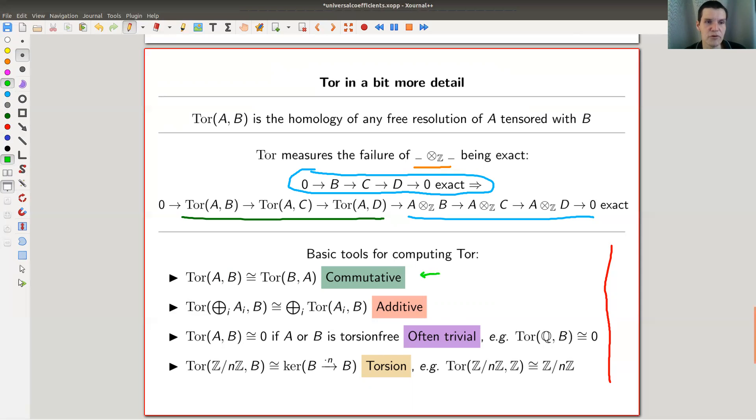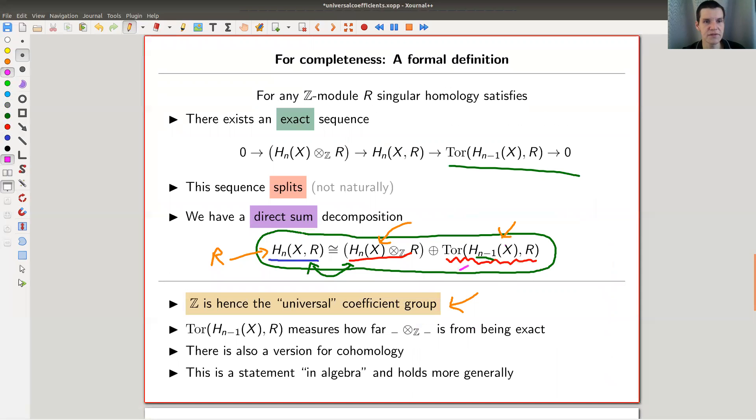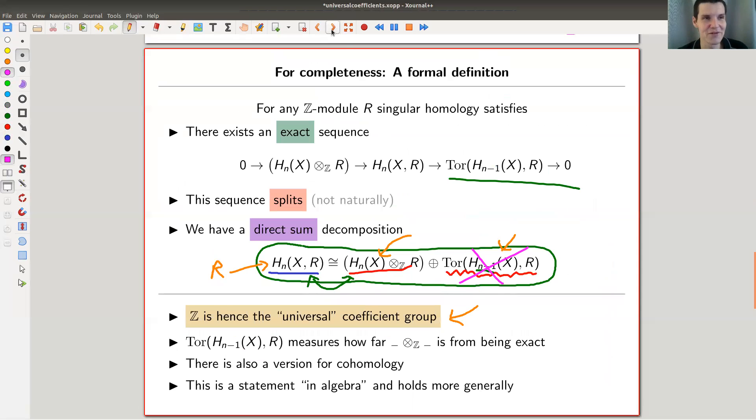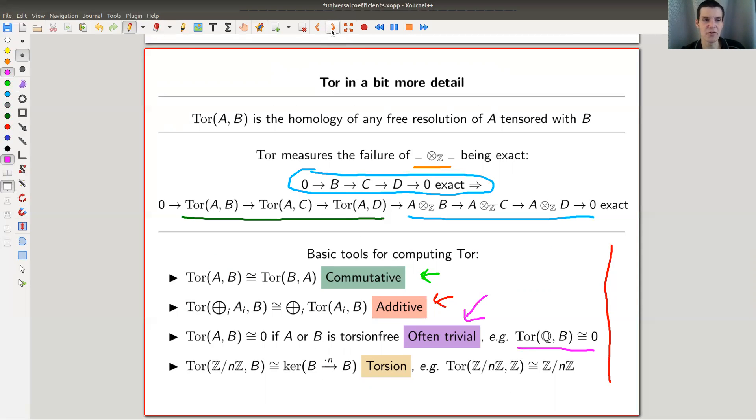So it's commutative - it doesn't matter whether you have input first or second, you can change them freely. You could pull out direct sums, and this one is pretty important: it's very often trivial. For example, for Q it's trivial. So if a Tor with Q appears, the Tor term dies, it always dies. So for Q this term dies, then the naive one and the one you want are always the same. And this was exactly what this calculation also gave us. So the universal coefficient theorem works - it's the generalization of the calculation from before. So it's very often trivial, and the only other thing you need to remember is what it does to Z mod n and Z mod n. For example, you have this one - so torsion, it measures the torsion, that's why it's called Tor.